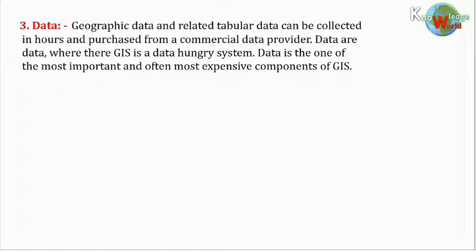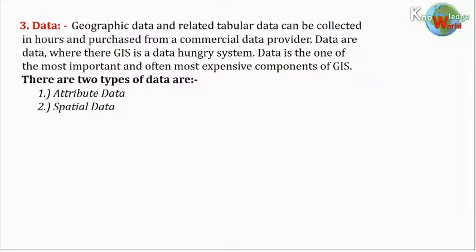Data. Geographic data and related tabular data can be collected in-house and purchased from a commercial data provider. GIS is a data-hungry system. Data is one of the most important and often most expensive components of GIS. There are two types of data: number one, attribute data; number two, spatial data.